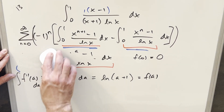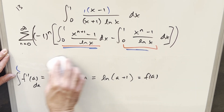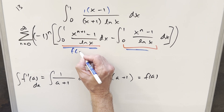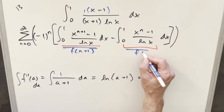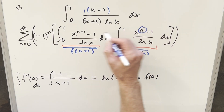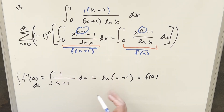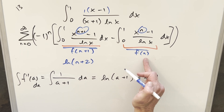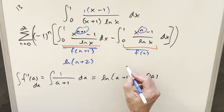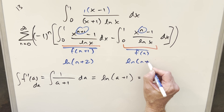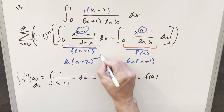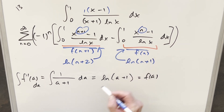Now we've got everything we need. For the first integral we want f(n plus 1), and for the second we want f(n), just using the exponents. Substituting: f(n plus 1) equals ln(n plus 2), and f(n) equals ln(n plus 1). We plug these values back in and continue to try to finish this off.